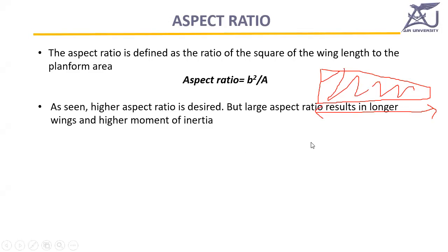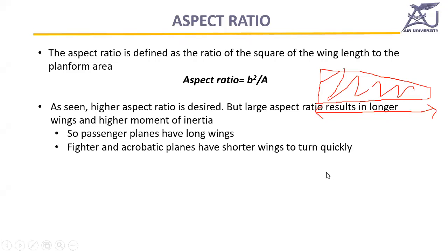We need a higher aspect ratio for wings. Passenger airplanes have long wings while fighter and acrobatic airplanes have shorter wings. This is because the longer the wings, the greater the moment of inertia. For passenger planes, fuel efficiency is prioritized. But for fighter jets and acrobatic planes, manoeuvrability is more important, so the aspect ratio is kept smaller to reduce the moment of inertia for quicker turning.